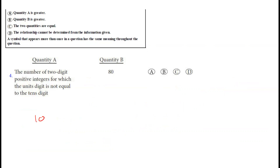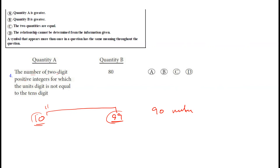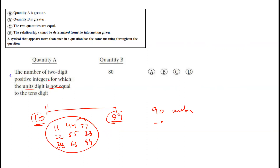Question four: the number of two-digit positive integers for which the units digit is not equal to the tens digit. Two-digit integers run from 10 to 99, giving 90 total numbers. We must exclude those where units digit equals tens digit: 11, 22, 33, 44, 55, 66, 77, 88, 99 — that's 9 numbers. So 90 − 9 = 81 numbers satisfy the condition.